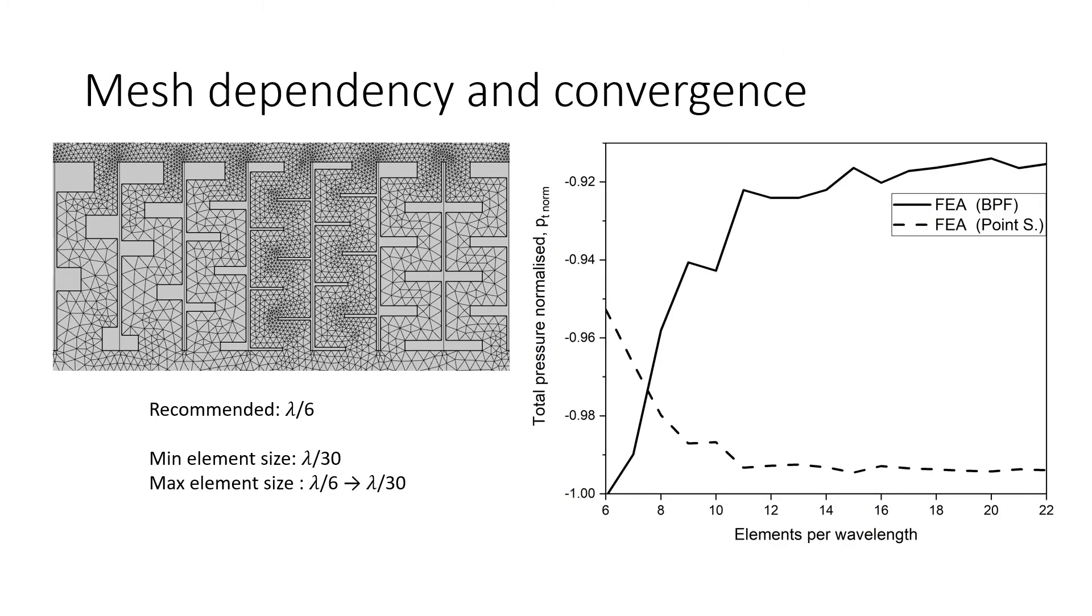A mesh dependency test on the total acoustic pressure at the triangle point of interest was conducted. Depending on the accuracy of the result desired it is advisable to mesh the modeled domain with a minimum of six elements per wavelength. In this study we have meshed the domain with a constant minimum size of 30 elements per wavelength and the maximum size is increased from 6 to 30 elements per wavelength.